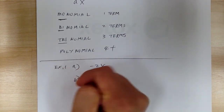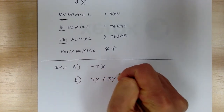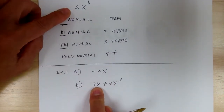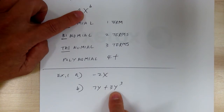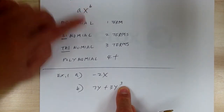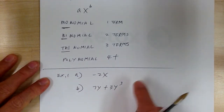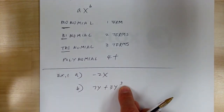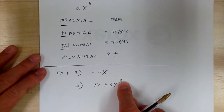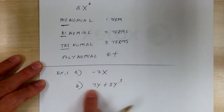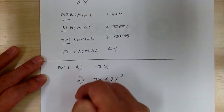Then B: you have 7Y plus 3Y³. This one fits that format — a number, variable, and an exponent that is a positive integer. Actually, it should be a non-negative integer, because you can have a zero exponent, which gives you a number, which is still okay. So this is an example of a binomial because it has two terms.